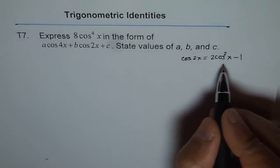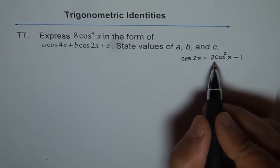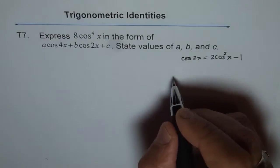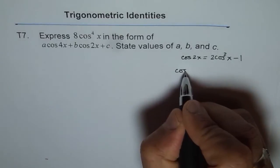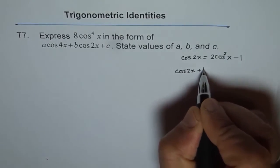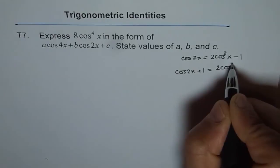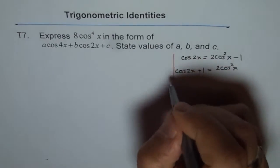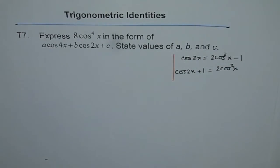And now we can rewrite this in a different way. We can write what 2 cos square x is. So we'll bring one to this side and we can say cos 2x plus 1 is equal to 2 cos square x. So we'll use this identity to find our expression.